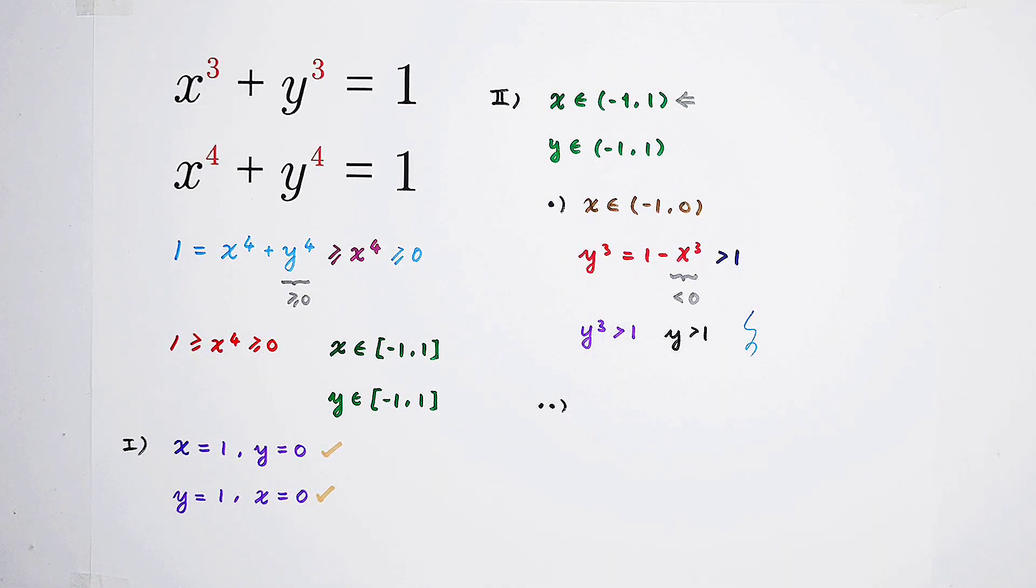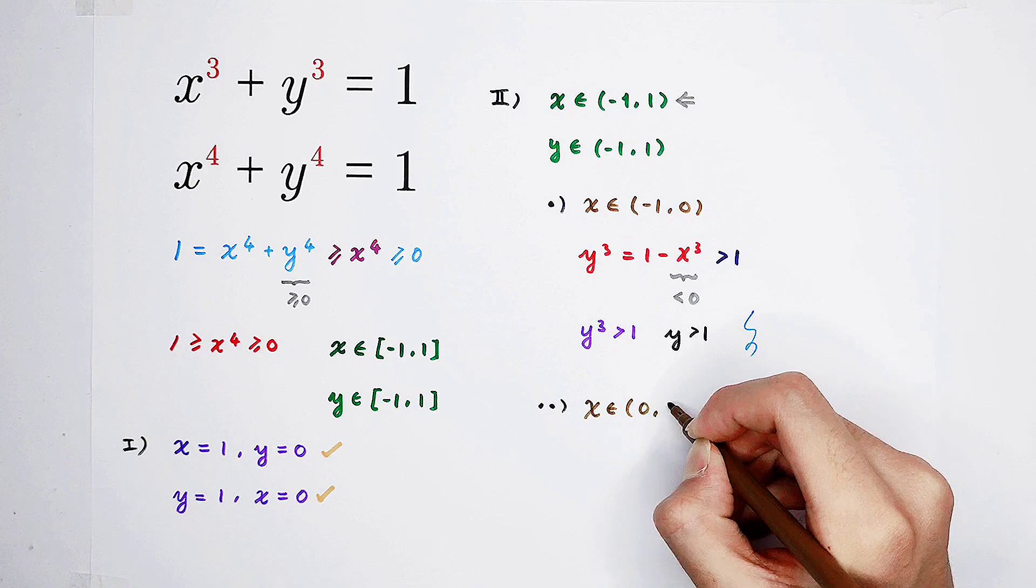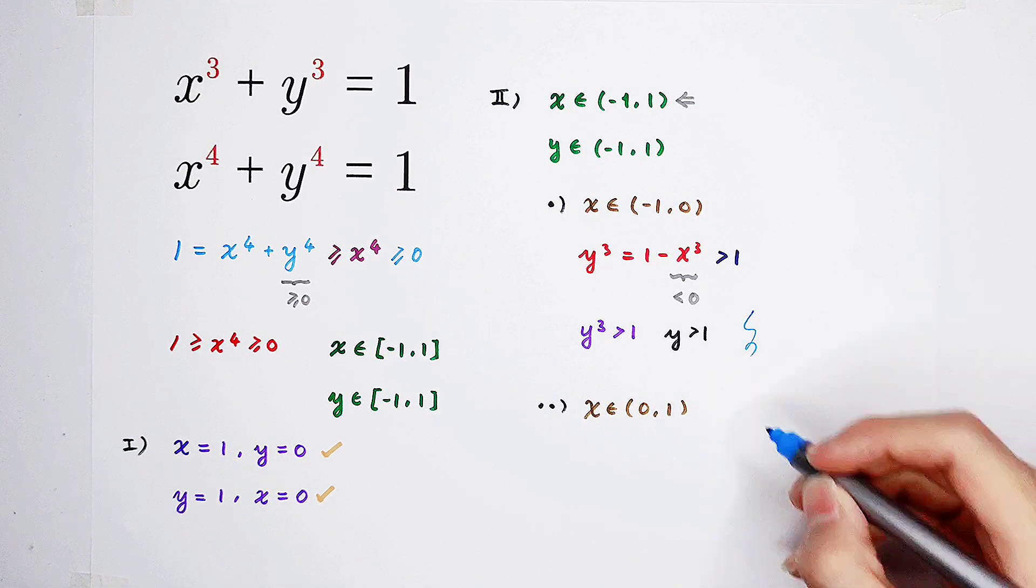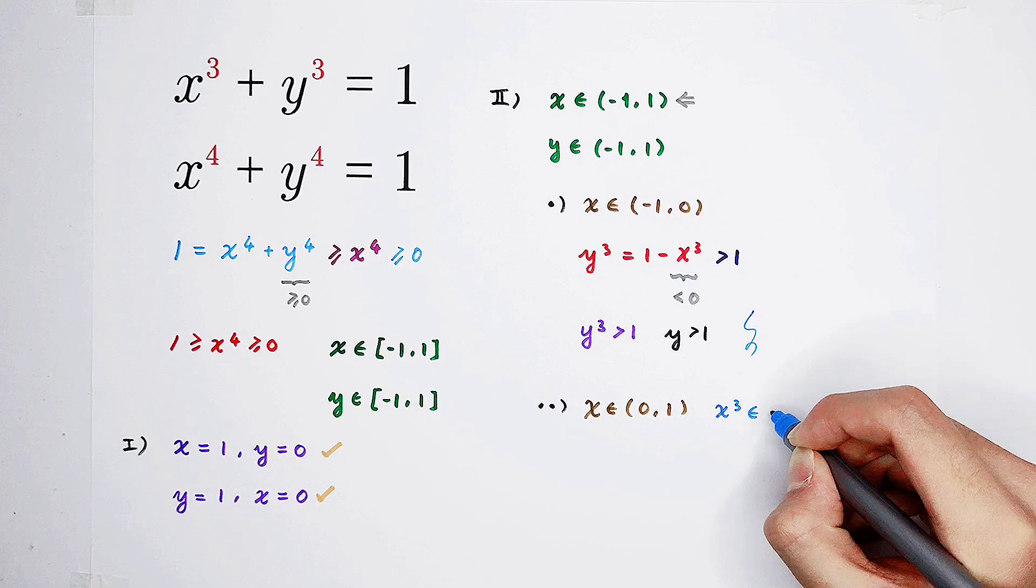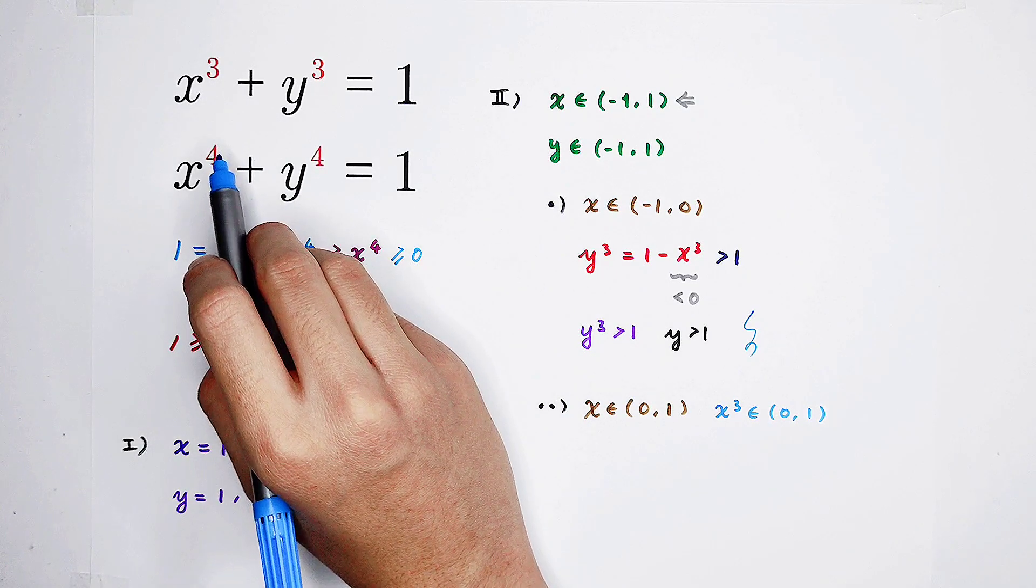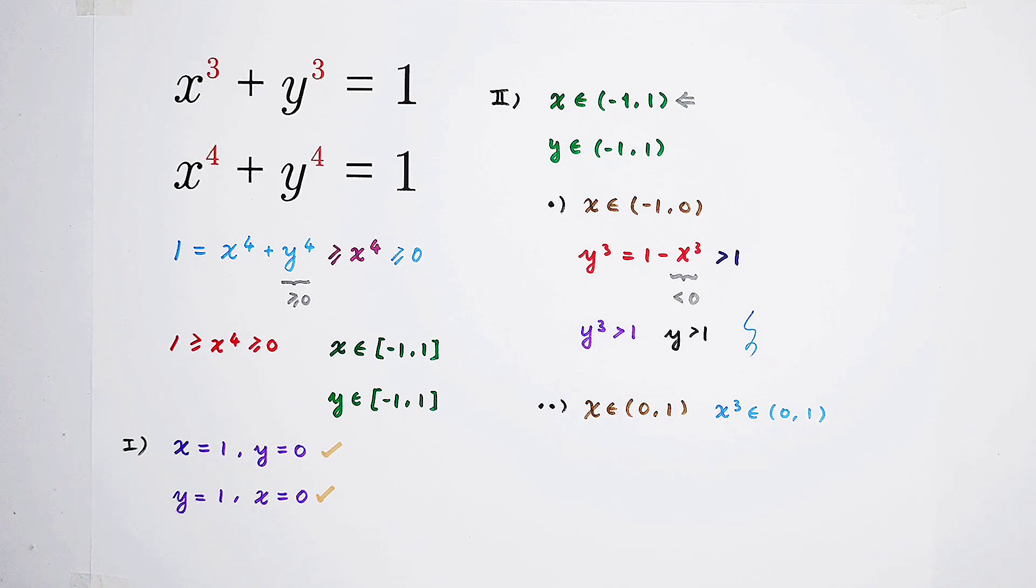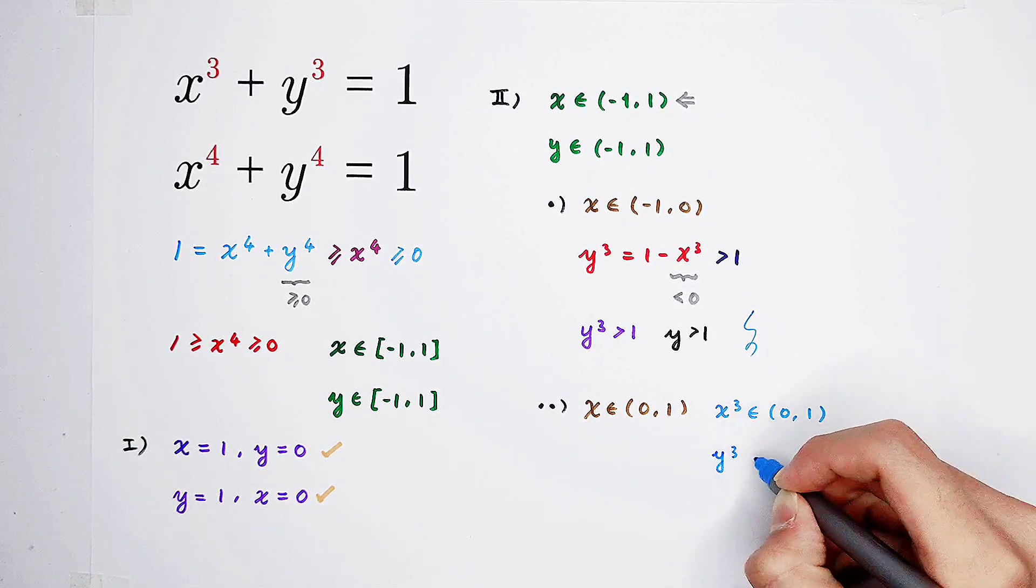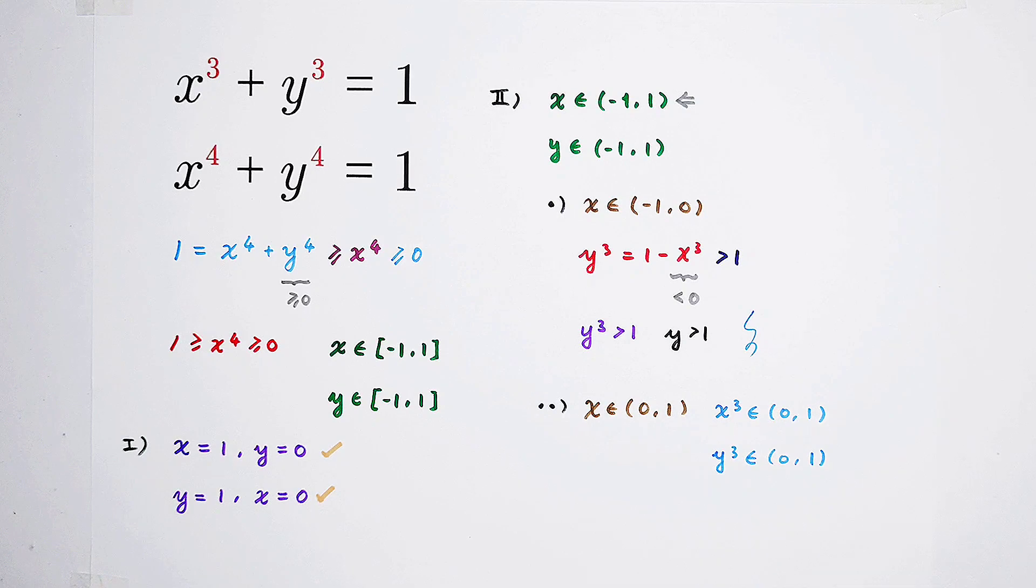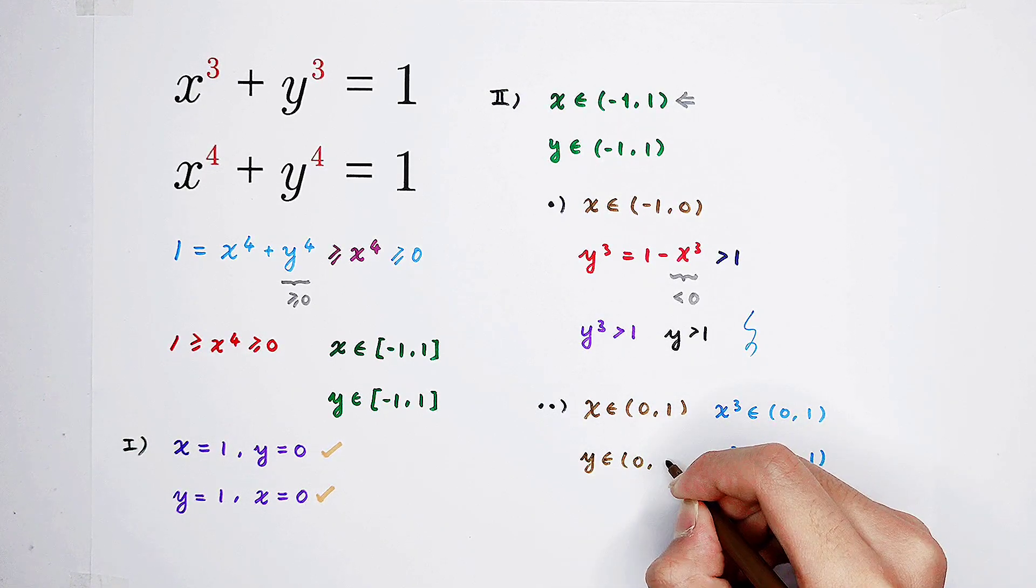Okay, our second small case. In this case, x is in the open interval from 0 to 1. Now, x cubed should also be in the open interval from 0 to 1. Because y cubed is 1 minus x cubed, according to this interval, we can get y cubed should also be in the open interval from 0 to 1.